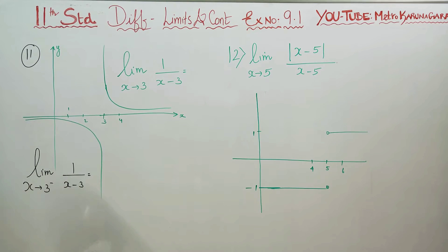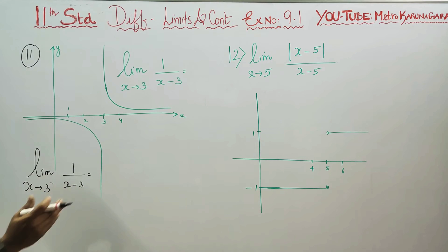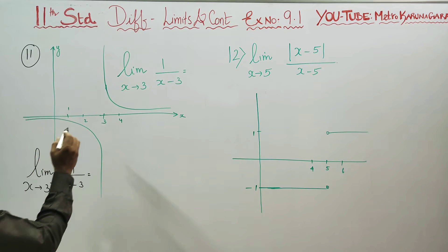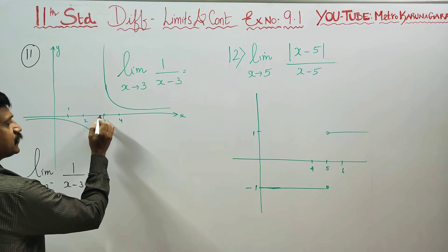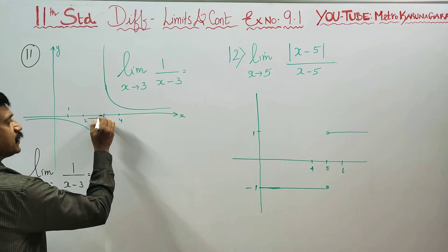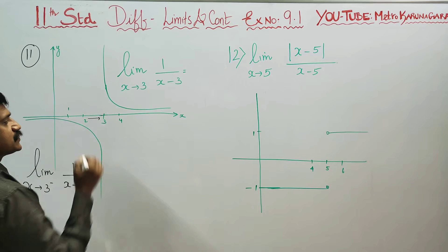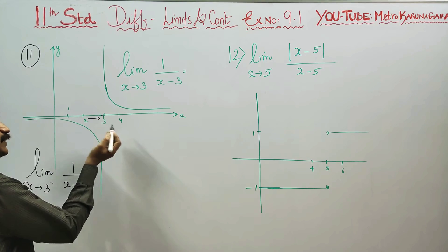That is the value of the left side limit. If the left side limit equals the right side limit, then the limit exists. If we look at the left side, approaching 3 from the left — for example, the value 2.9999 is the value approaching from the left side.